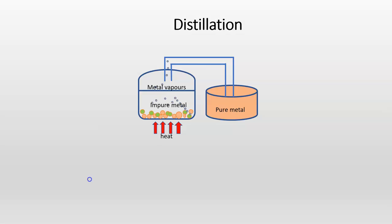Another method of refining of crude metal is distillation. Metals having low boiling points like mercury or zinc are refined by distillation technique.